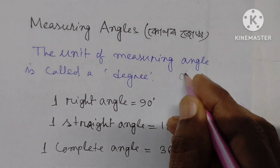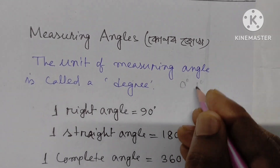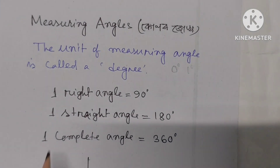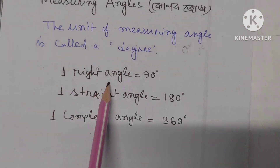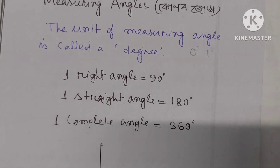There is zero degree. One right angle is equal to 90 degrees.